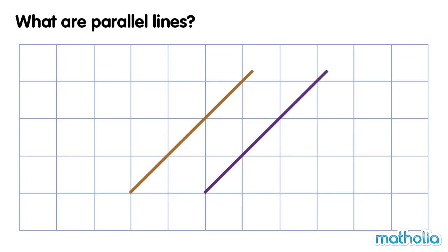Look at the lines on the grid. The distance between the lines at the top is two grid squares. The distance between the lines at the bottom is also two grid squares. The lines are parallel.